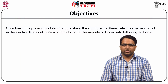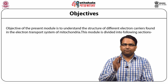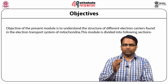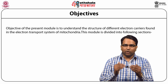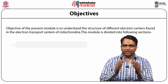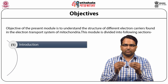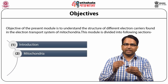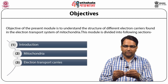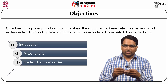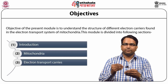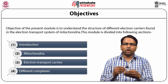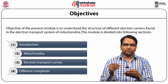The objective of this module is to understand the structure of different electron carriers present in the electron transport system. This module has been divided into the following sections: first, an introduction of different electron transport systems; then the structure of mitochondria; then different electron transport carriers such as ubiquinone, NADH, and other carriers; and finally the different complexes found in the mitochondrial electron transport system.